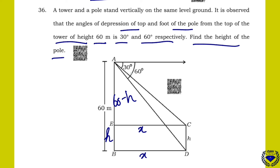In the diagram, let the pole height be H, the base distance be X. This angle is 30 degrees (alternate angles from angle of depression). The bigger triangle has angle 60 degrees. Start with the smaller triangle AEC where angle E is 90 degrees.